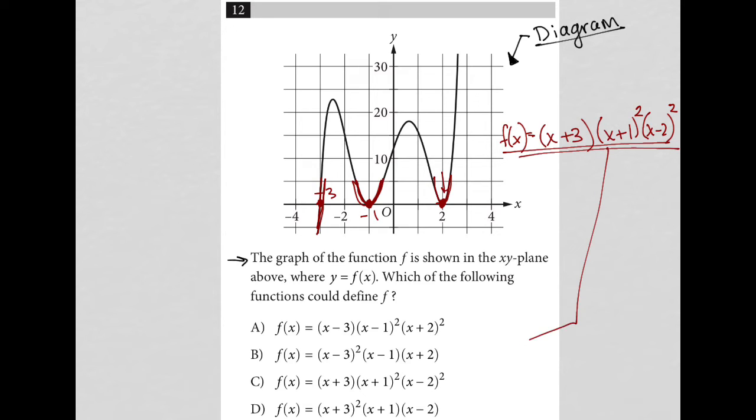The way that you could test this, if you wanted to reverse engineer, is if I write out answer choice C, for instance, f of x equals x plus 3, x plus 1 squared, and x minus 2 squared.